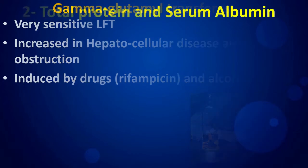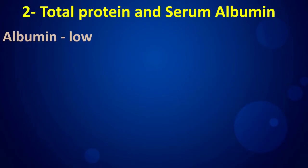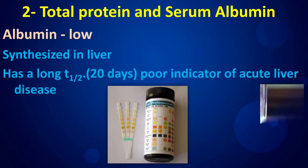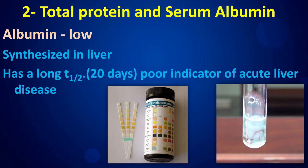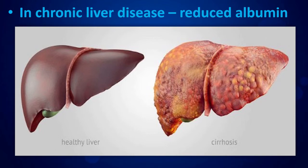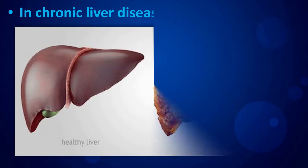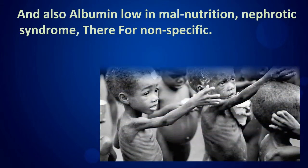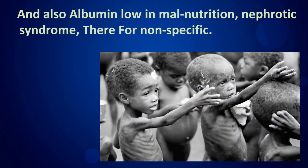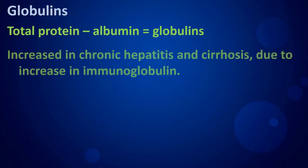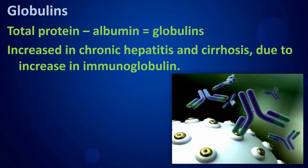Serum albumin is synthesized in the liver and has a long half-life, making it a poor indicator of acute liver disease. In chronic liver disease, albumin is reduced. However, albumin is also low in malnutrition and nephrotic syndrome, making it non-specific. Globulins equal total protein minus albumin and are increased in chronic hepatitis and cirrhosis due to elevated immunoglobulins.